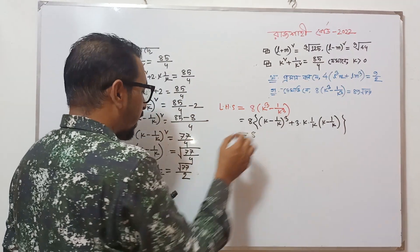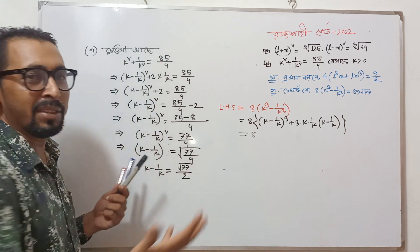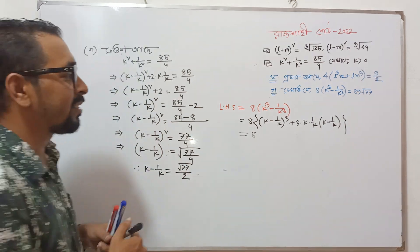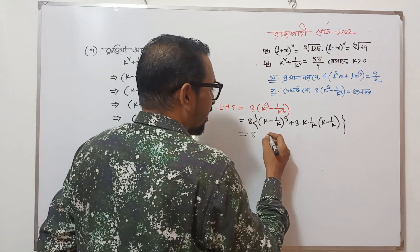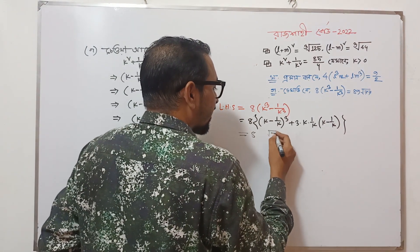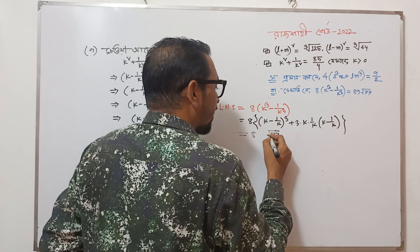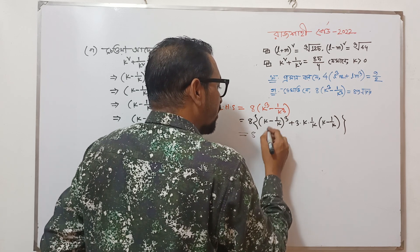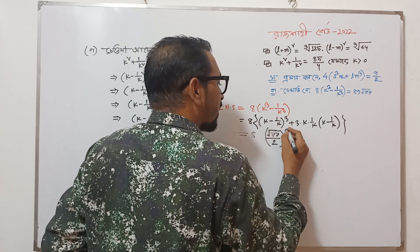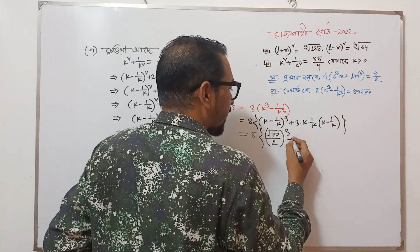So k minus 1 by k will be root 77 divided by 2. The second bracket is plus.